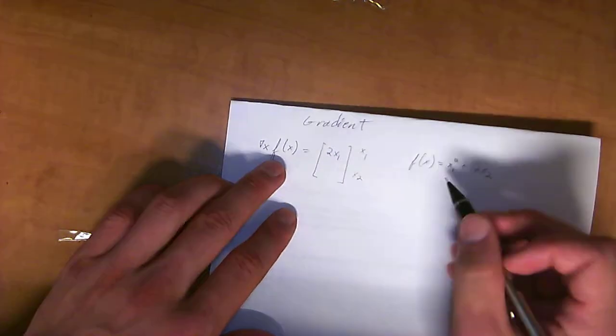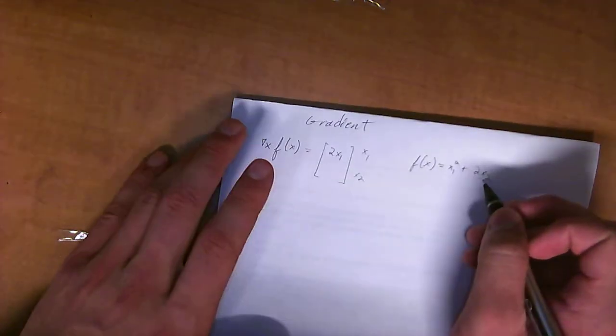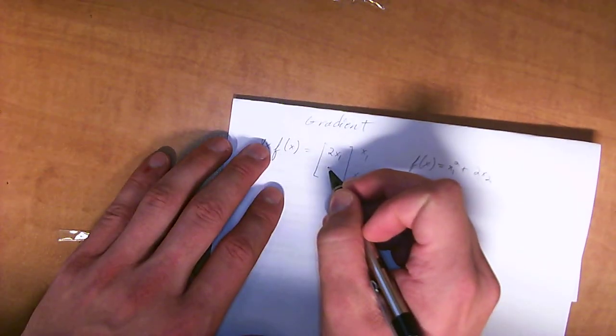So that's the gradient of any given function. But the gradient has a unique property in which you can find another derivative.